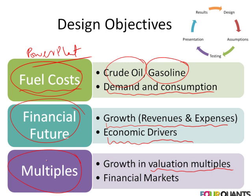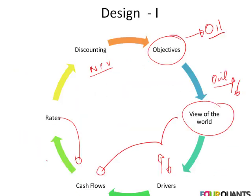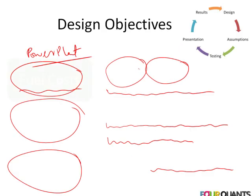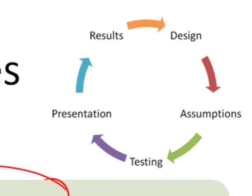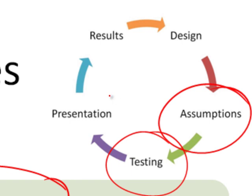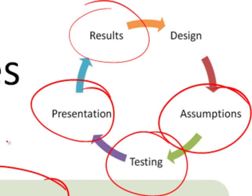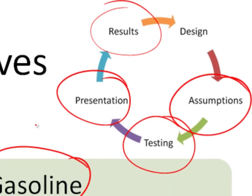Effectively, I have model objectives — I'm building a power plant, I need to figure out how oil works. For me to figure out how oil works, I need to figure out how different views of the world impact oil prices. I then figure out the primary drivers that determine my view of the world with respect to oil prices. Then I translate that into cash flows, interest rates, and an NPV model. At a higher level, if I have a fuel cost model, I need to determine what my primary assumptions are, how these assumptions would be tested, what the format for presenting results is, and who these results are being presented to.